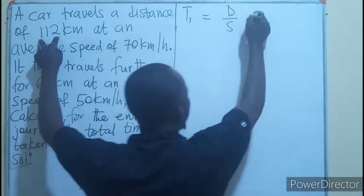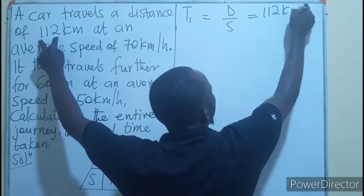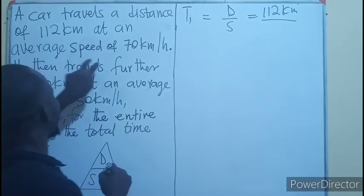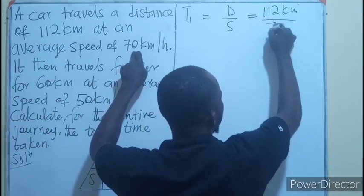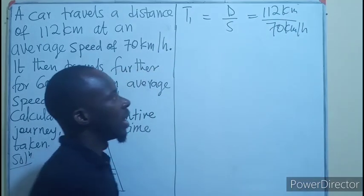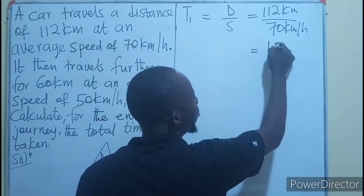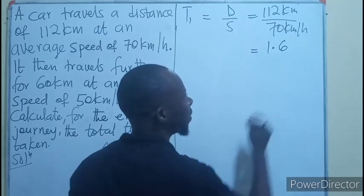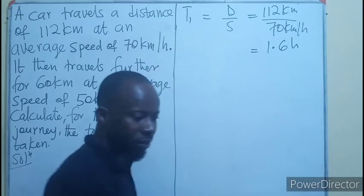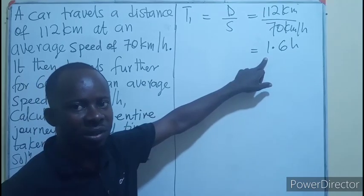And that is going to be 112 kilometers. Then the speed will be 70 kilometers per hour. And if we do that calculation, that will give us 1.6 hours. So the time for the first part of the journey is 1.6 hours.